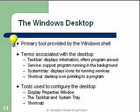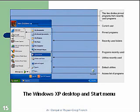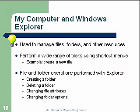Tools used to configure the desktop include display properties, the taskbar, system tray, and shortcuts. In Windows XP, desktop and shortcut menus are available. My Computer and Windows Explorer are used to manage files, folders, and other resources, and can perform a wide variety of tasks using shortcut menus — for example, creating a new file.